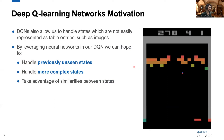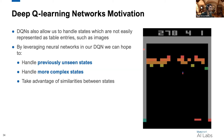DQN also allows us to handle states which don't fit nicely into a table. In our frozen lake example, it was easy to translate the grid into table entries. But in the Breakout game example, it's not clear how we would take an image and put it into a table — perhaps we could hash it, but it doesn't naturally map and we'd lose information. Since DQNs use a neural network, we can build on all the work in computer vision that neural networks have succeeded with. This allows us to handle much more complex states and states we haven't seen before, taking advantage of state similarity.